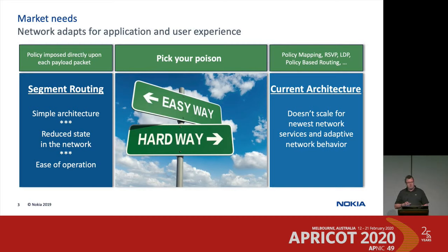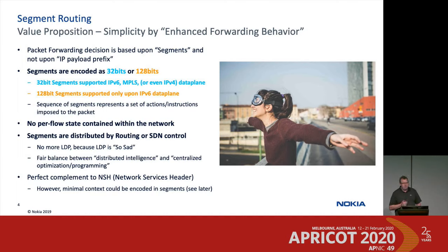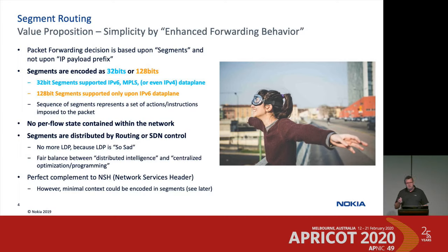If you choose the segment routing path, the big difference is this: in classical networks you route packets based upon destination IP addresses. That paradigm changes with segment routing — you forward or switch packets based upon segments. These segments, which you impose upon the packet, can be either 32-bit or 128-bit, and that is something you will have to think about.